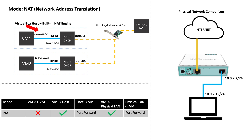The built-in DHCP server provides the virtual machine with an IP address — by default, it's 10.0.2.15/24. The VM is now set up and able to communicate with the external network, which is your physical LAN, including the internet. If we look at the table below, when you use NAT mode, the VMs will not be able to communicate with each other, as these NAT networks are totally isolated.